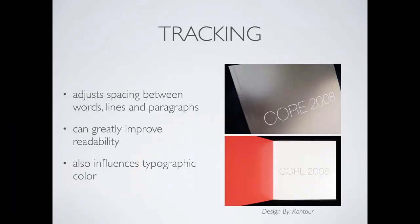Tracking, on the other hand, adjusts the spacing between words, lines, and paragraphs. Remember I said I'd tell you how to make your English paper a little bit longer? There's your ticket. Instead of making the font bigger or switching to an extended font, you adjust the tracking and suddenly your paper gets longer without looking very different — it might get a little lighter from a typographic color standpoint, but it just spreads everything out a little bit.